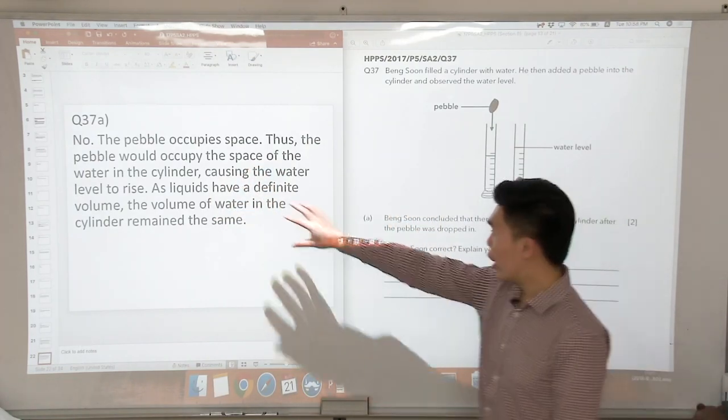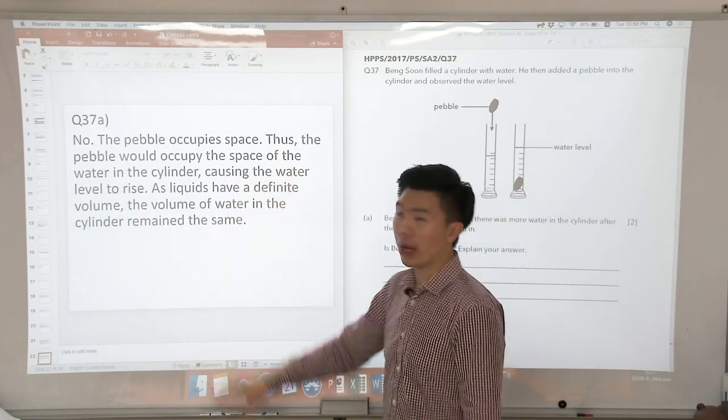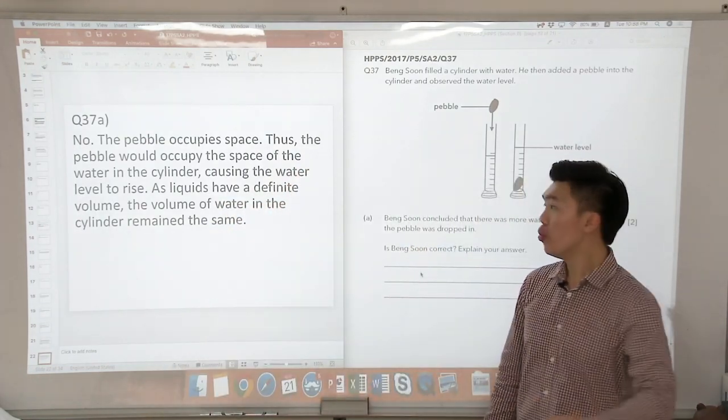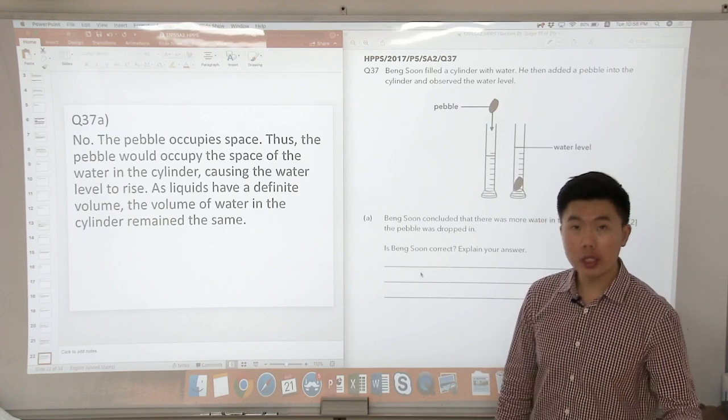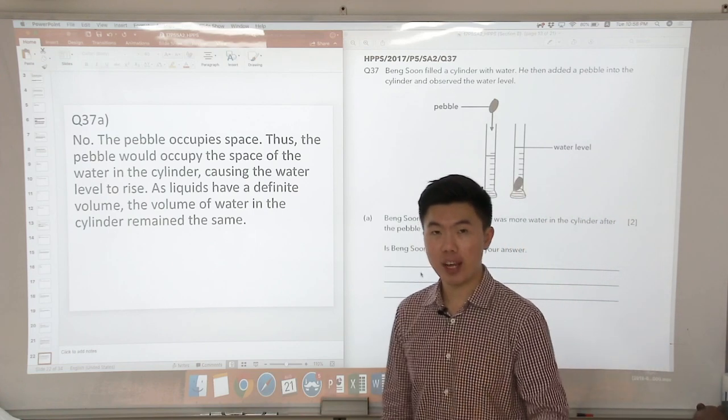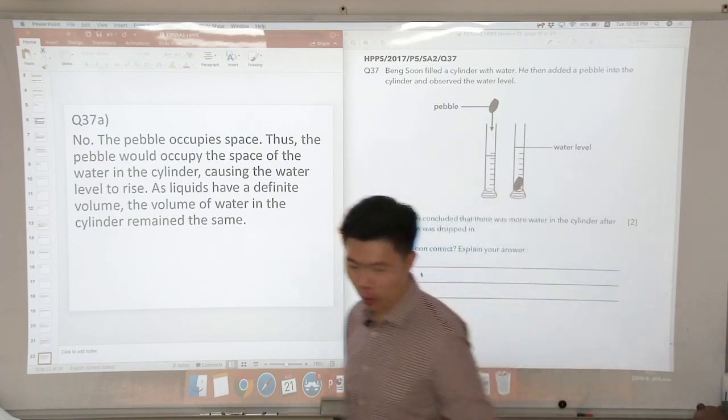What did we learn about liquids? Liquids have a definite volume and therefore the volume would not change. The volume of the water would remain the same. So that's for part A of the question.